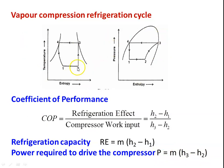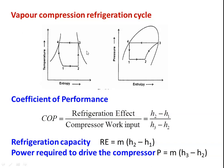Before compression, the refrigerant is in wet vapor condition. After compression, it is dry saturated vapor, and after condensation, it is saturated liquid. After throttling, it is again wet vapor. The conditions at states 2, 3, and 4 will differ depending on the compression and depending on undercooling or superheating of the vapor. This is the basic vapor compression cycle.